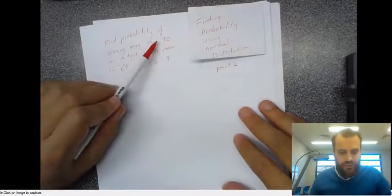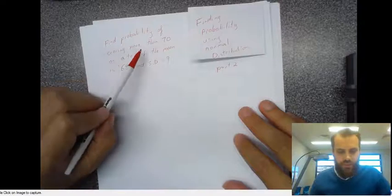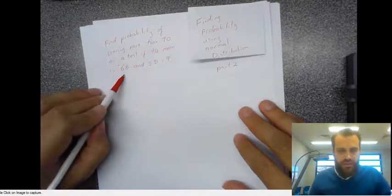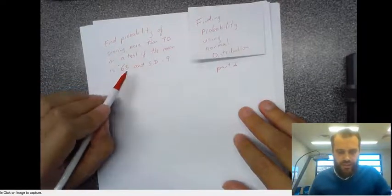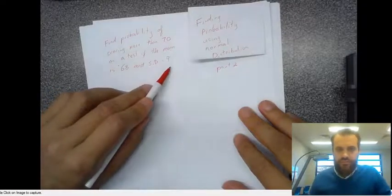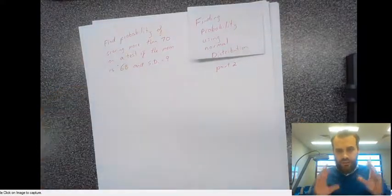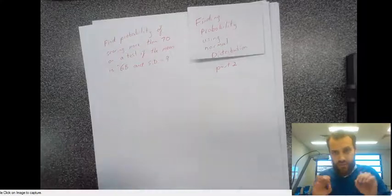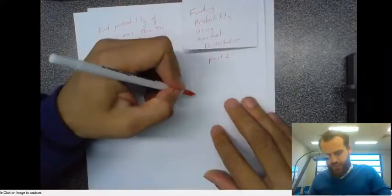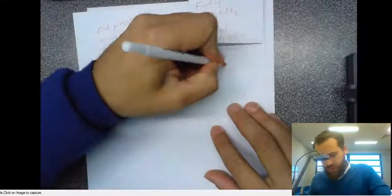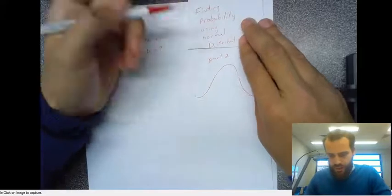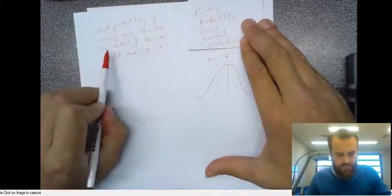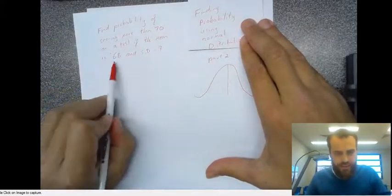Find the probability of scoring more than 70 on a test if the mean is 68 and the standard deviation equals 9. First thing I'm going to do is draw it — it's a really good idea to start by drawing these things. Normal distribution. Here's the mean: mean is 68.